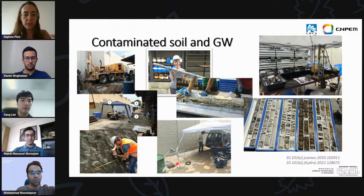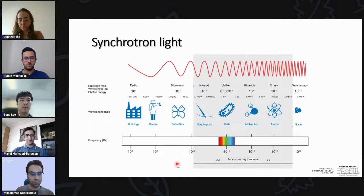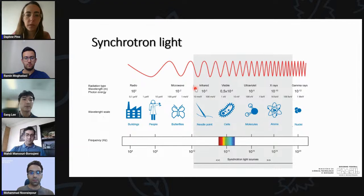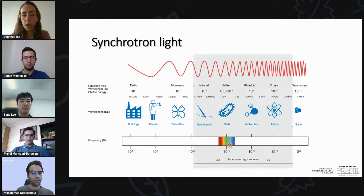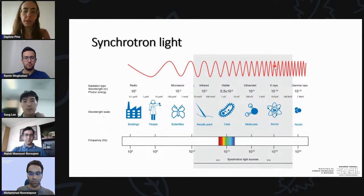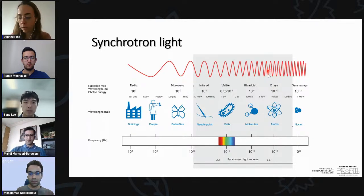To study the pore scale, we cannot gather data directly from fieldwork, but we can use synchrotron light. Synchrotron light is a type of radiation with high brilliance and high energy, with a broad spectrum ranging from infrared to X-rays. The type and wavelength you use depends on the kind of experiment you want to perform. Both examples I'll show today use X-rays, specifically at the beamline working with X-ray microtomography.